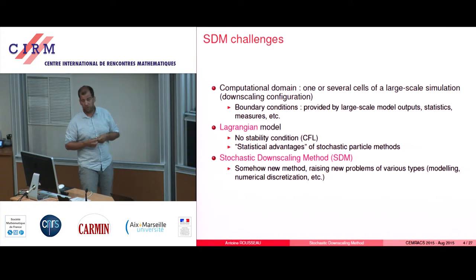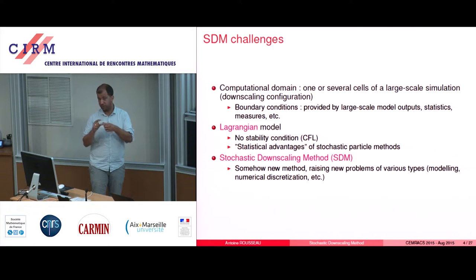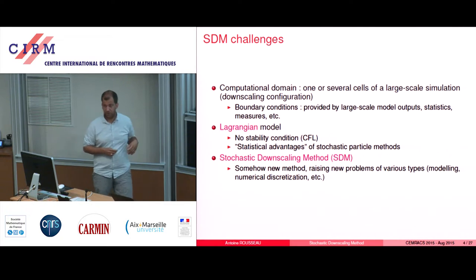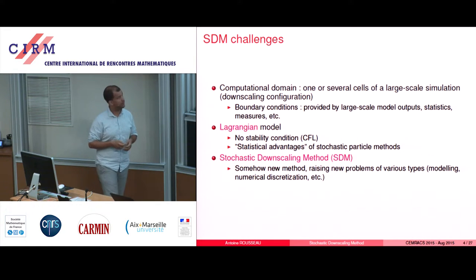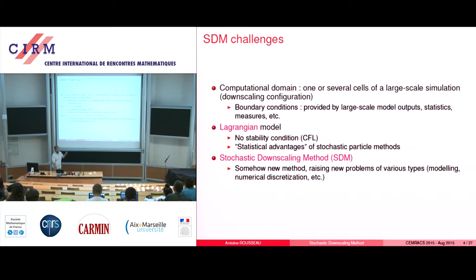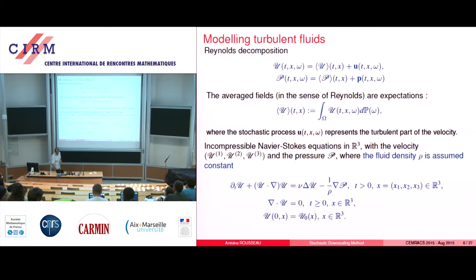SDM is in some ways a new method, though it was developed in the 1980s by Stephen Pope, a physicist in the US, who used it only for reactive fluids at very small scales. The main point of our work was to apply this kind of method at a much larger scale for geophysical fluids, which raises new problems in modeling, numerical discretization, and well-posedness of stochastic systems. The outline: a brief introduction on turbulent fluids, then the SDM model, then new validation results.